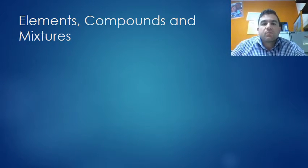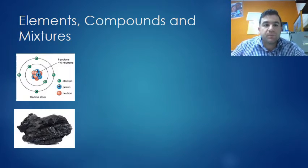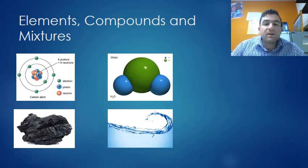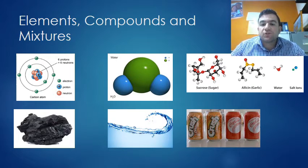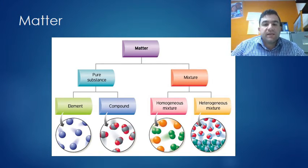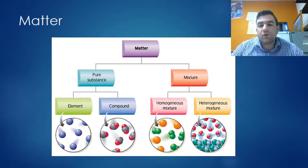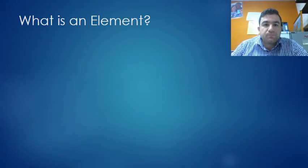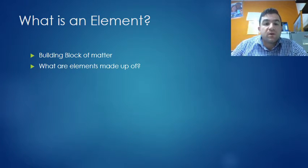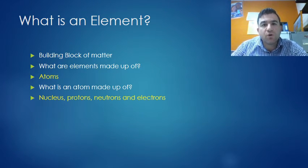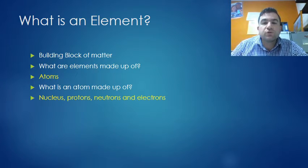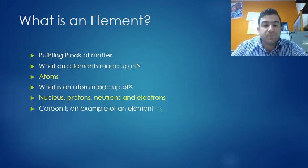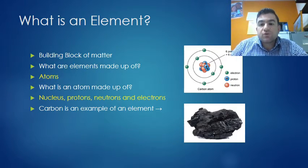The three states of matter can be divided into elements, compounds, and mixtures. Elements are things like carbon, compounds are things like water, and mixtures are things like soft drinks. Matter is broken down into pure substances, which are elements and compounds, and mixtures. What is an element? Elements are the building blocks of matter. They are all around us. What are elements made up of? They're made up of atoms, and the atoms are made up of a nucleus, protons, neutrons, and electrons. The amount of protons and neutrons in the nucleus determine what the element is. Carbon is an example of an element - it has six protons, six neutrons, and six electrons.